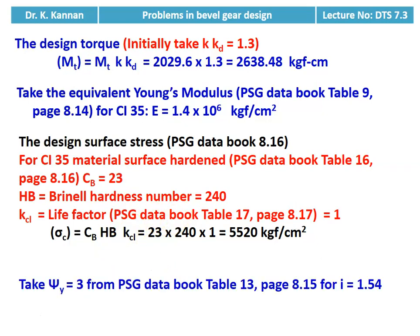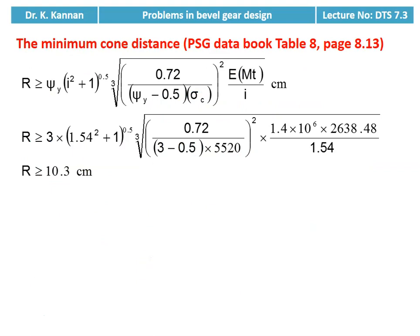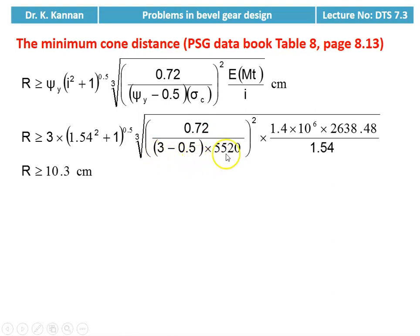We take psi_y = 3 for open gearing with i = 1.54. Then we calculate the minimum cone distance using the equation in table 8, page 8.13: R ≥ psi_y × (i² + 1)^0.5 × ∛[0.72 / (psi_y − 0.5) × sigma_C² × E × MT / i]. Substituting numerical values, R ≥ 3 × (1.54² + 1)^0.5 × ∛[0.72 / (3 − 0.5) × 5520² × 1.4 × 10⁶ × 2638.48 / 1.54], giving R ≥ 10.3 centimeter.